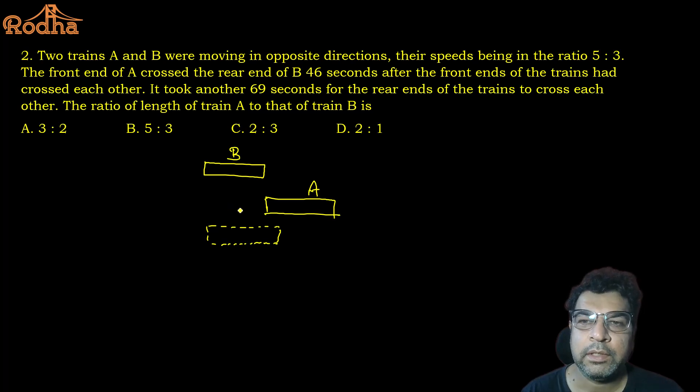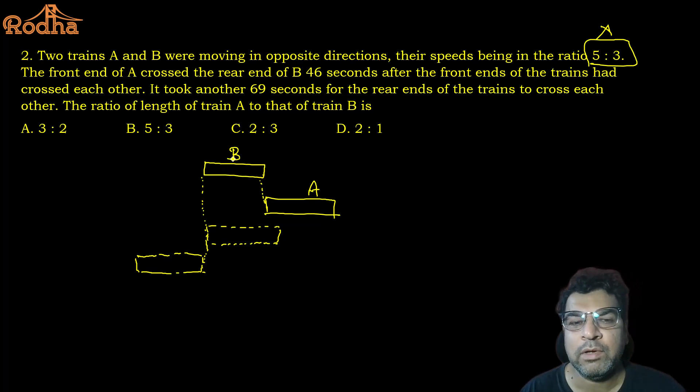This gives you 46 seconds, and it took another 69 seconds for the rear ends to cross itself. After this, this will happen in another 69 seconds. First, what is the thing here? This ratio is useless to you because we are considering two trains, and whenever two bodies are being considered, the speed will always be relative speed. So we will only focus on distance and time because speed is fixed for the whole scenario. Speed is fixed, it does not make any difference.